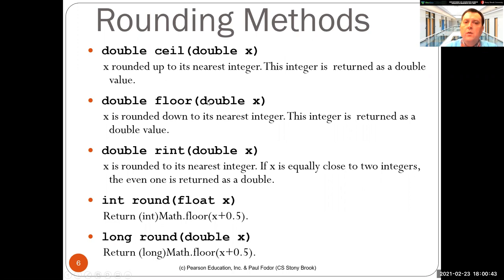Similarly for floor, floor of double x rounds down to the nearest integer. Again, this integer is returned as a double value.